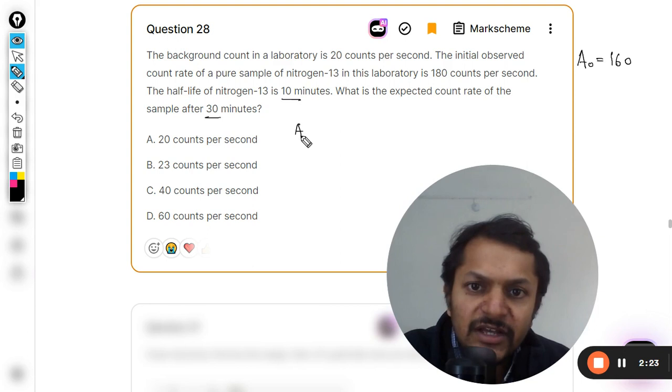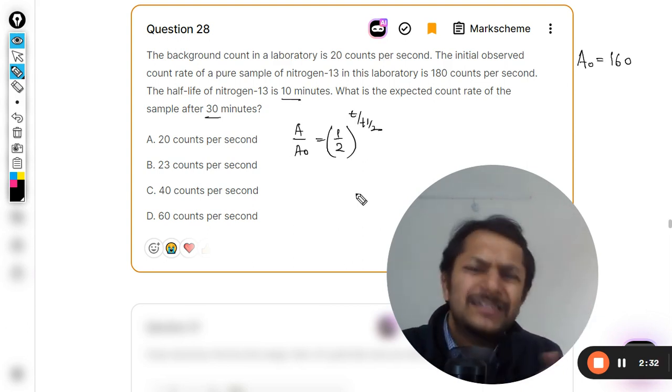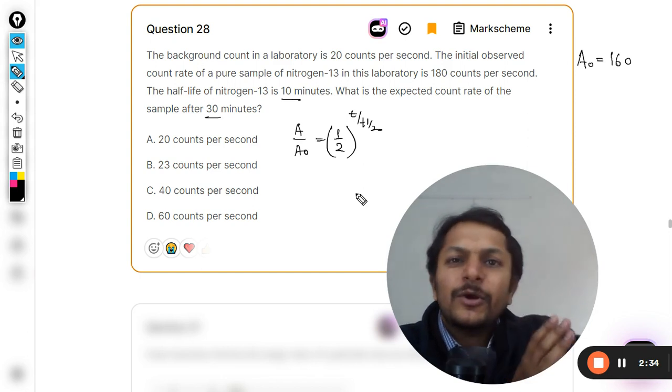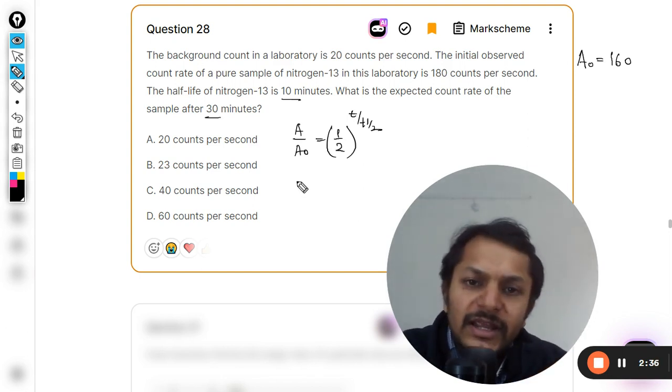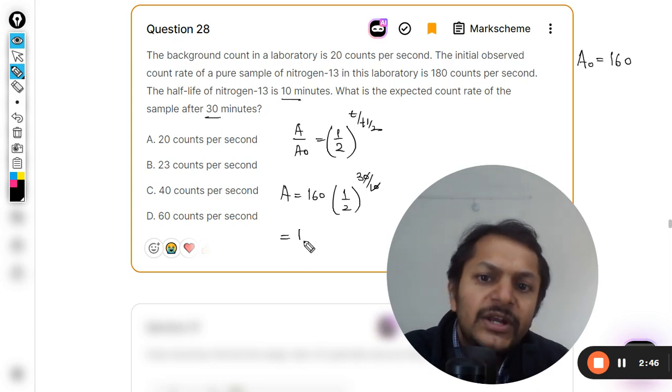The half-life is given as 10, the time is 30. There is a very important formula that I have given you earlier many times. We are going to use this formula now - it's like keep on dividing by 2. So A = A₀(1/2)^(30/10) which becomes 3.